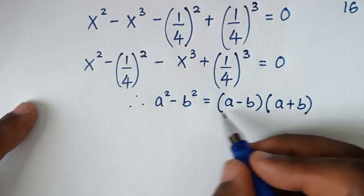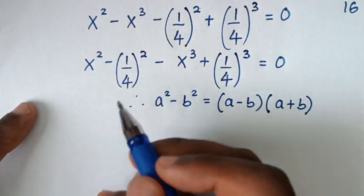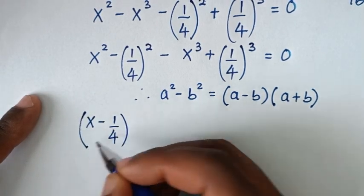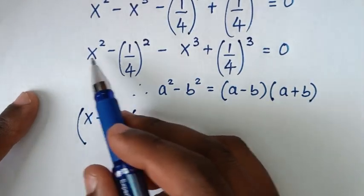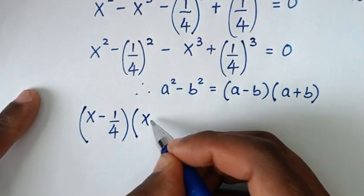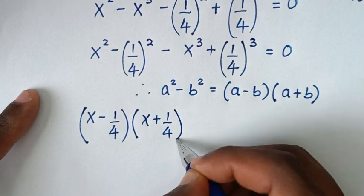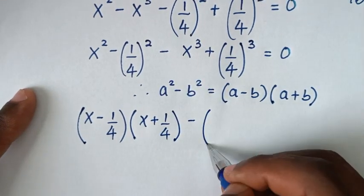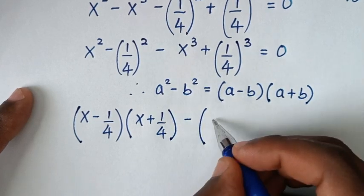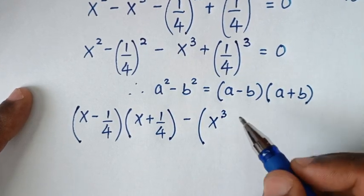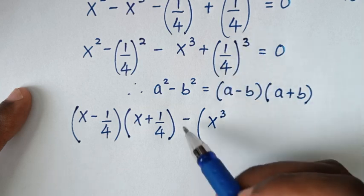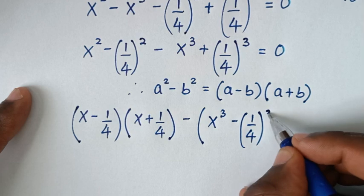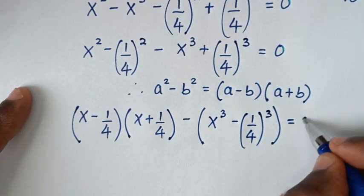By applying this form here, a minus b gives (x minus 1/4). Then from the second part, we take negative out of the bracket: negative x cubed divided by negative gives positive x cubed, and positive (1/4) cubed divided by negative gives minus (1/4) cubed, equal to 0.